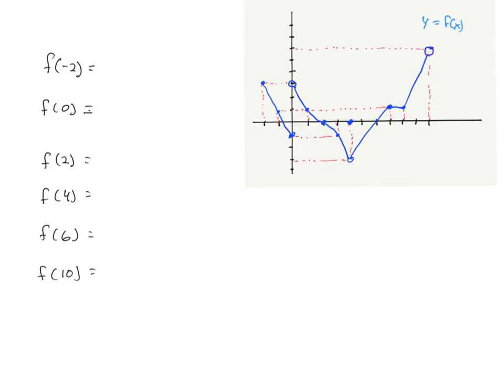Another place you'll see function notation is evaluating a function by looking at a graph. In this problem, the blue represents the function, and red lines show the x and y coordinates of particular points. Keep in mind: dots represent actual value points on the graph, while open circles represent points we're getting close to but never actually reach.